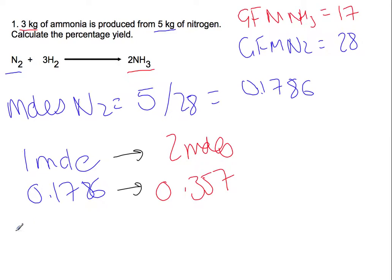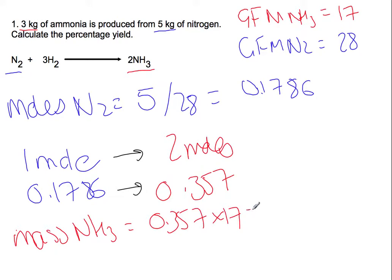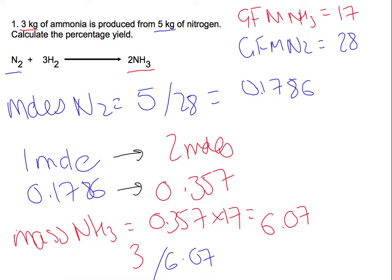That means we can work out the theoretical mass of ammonia by doing moles times the gram formula mass of ammonia. So we should have produced 6.07 kilograms. We then take the actual mass of 3 divided by 6.07, times that by 100, and we get a percentage yield of 49.4%.